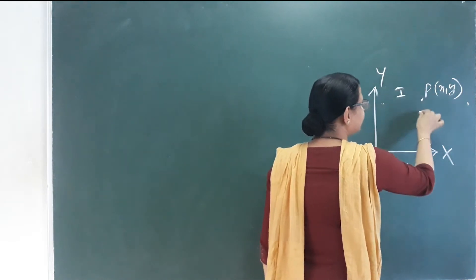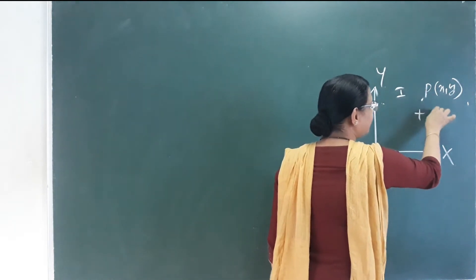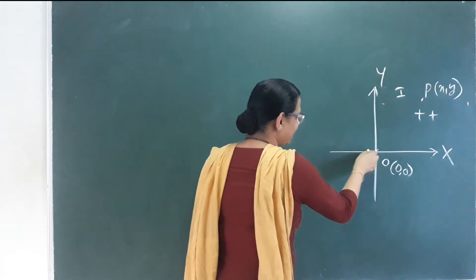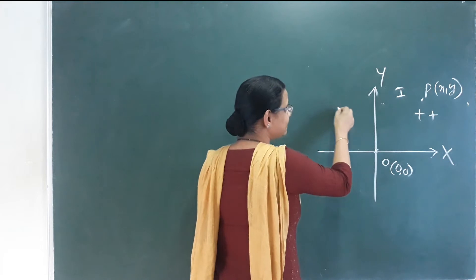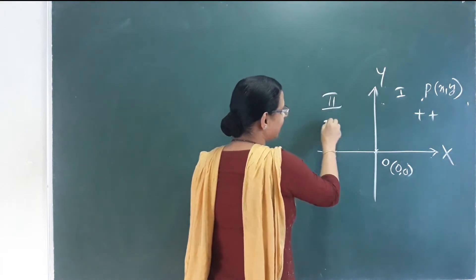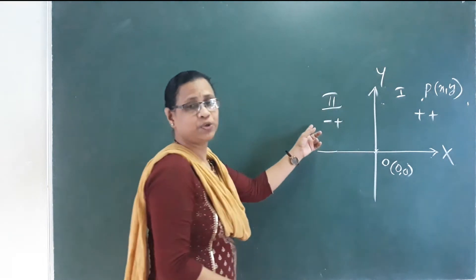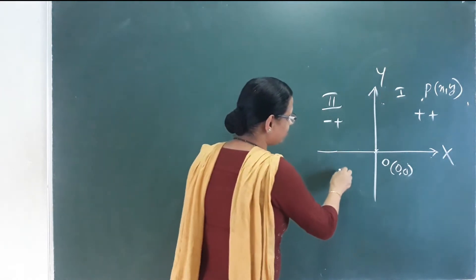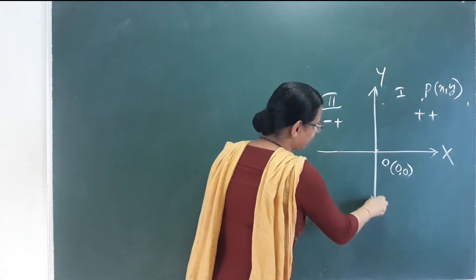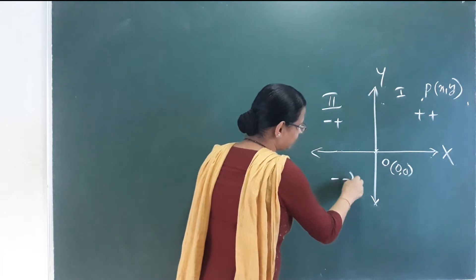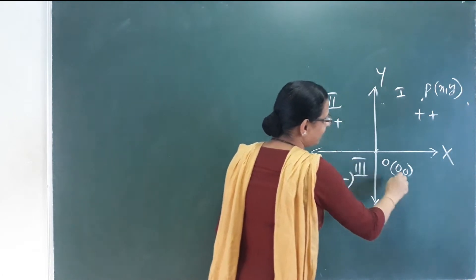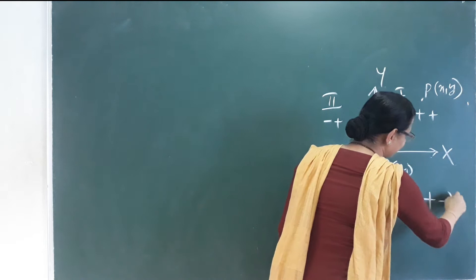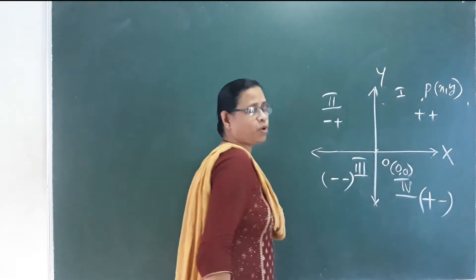In the first quadrant, the points are all positive (+, +). In the second quadrant, X is negative and Y is positive (−, +). In the third quadrant, the points are negative and negative (−, −). In the fourth quadrant, the points are positive and negative (+, −).